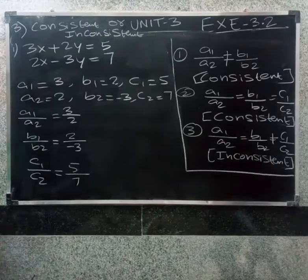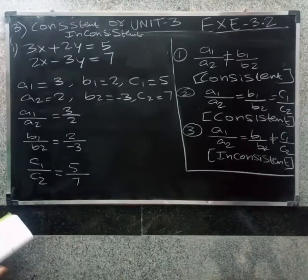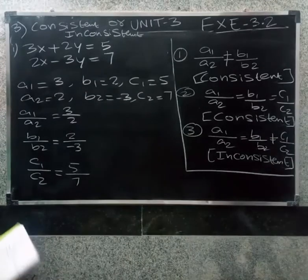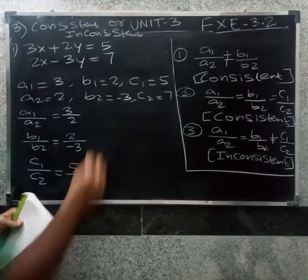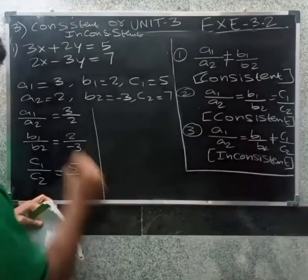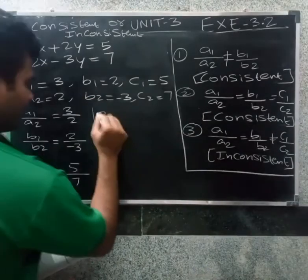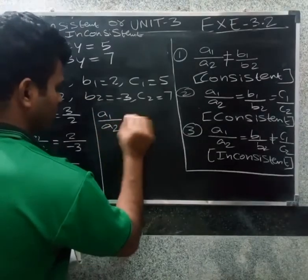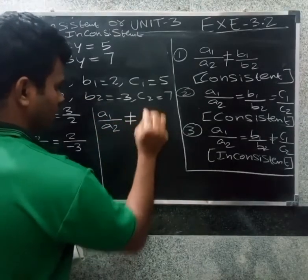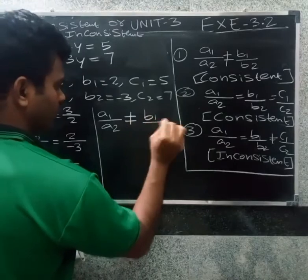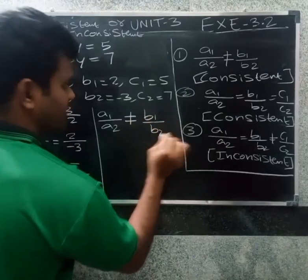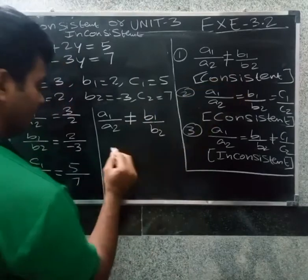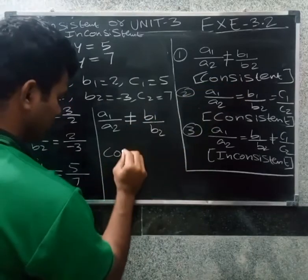So a1 by a2 is not equal to b1 by b2, which is not equal to c1 by c2. Therefore the first condition is satisfied, so this system is consistent.